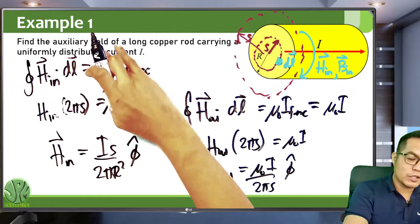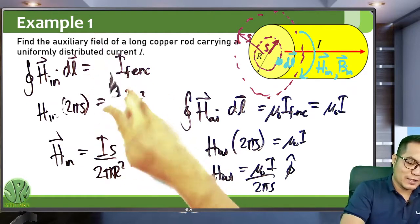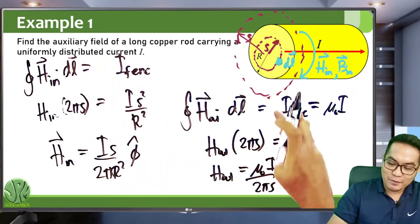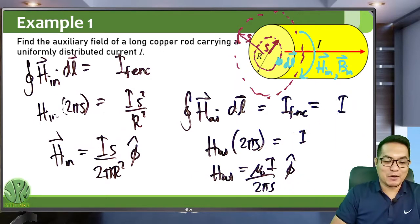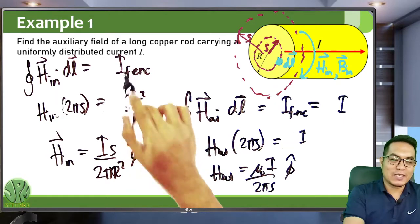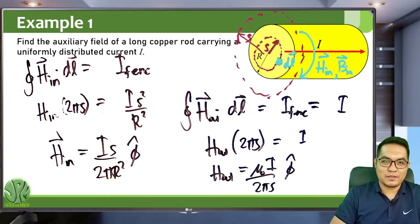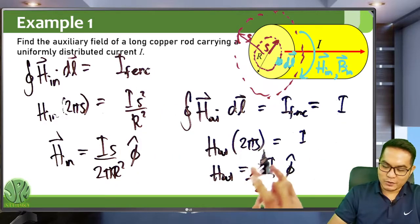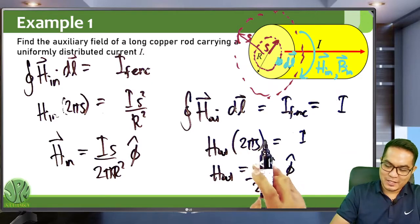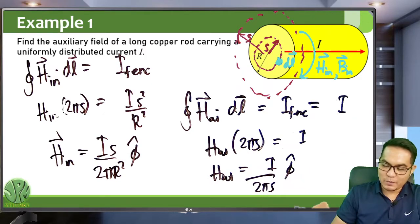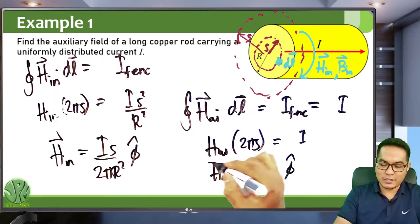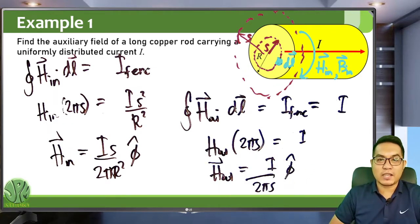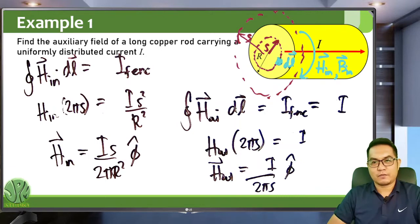Correction: there is no mu-naught in Ampere's law for magnetized objects. The equation has no permeability of free space — it is simply equal to the free current enclosed. So the auxiliary field outside is I over 2πS.